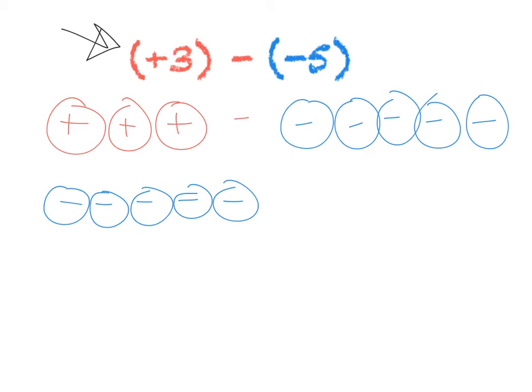To ensure that my number doesn't change from positive three to something else, I need to also add one, two, three, four, five positive counters as well. Remember, every pair of one negative and one positive equals zero. So my actual answer right now on this side is still just the positive three because all these pairs don't equal anything.